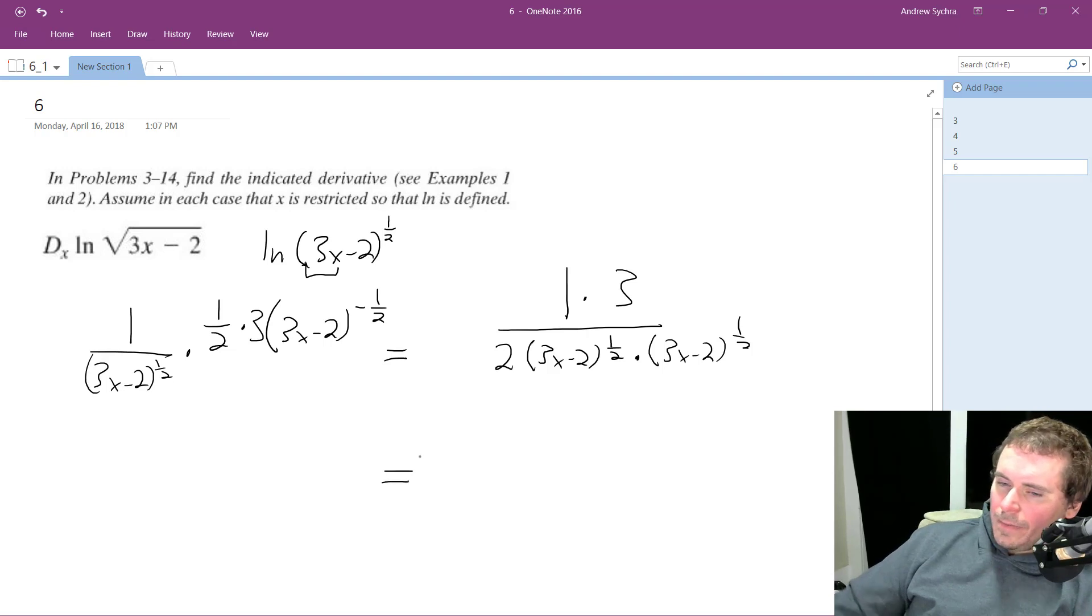So, finishing this up. What we have here is 3 over quantity 2, and then we can combine these because they have the same base. We just combine the exponents and we get 3x minus 2, and it's just 1 over 1, or 2 over 2, which is just 1.